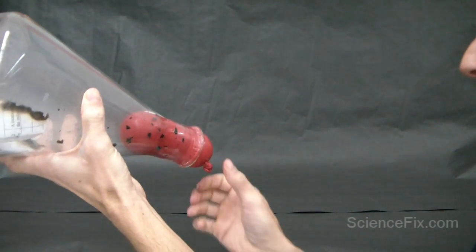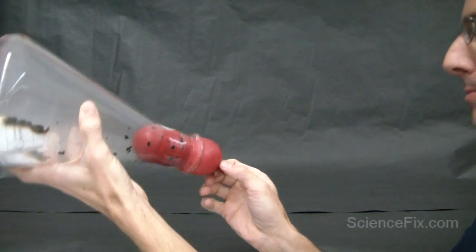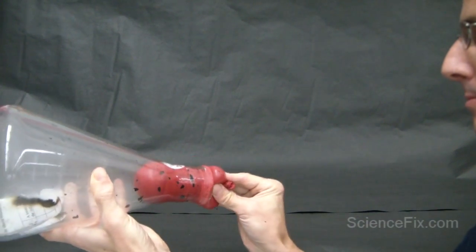To get the balloon out, you have to blow into the flask and that causes the balloon to get pushed back out. It's kind of funny looking at it.